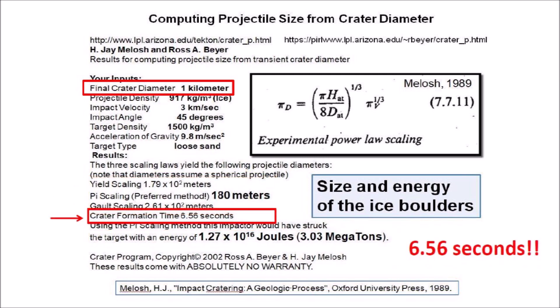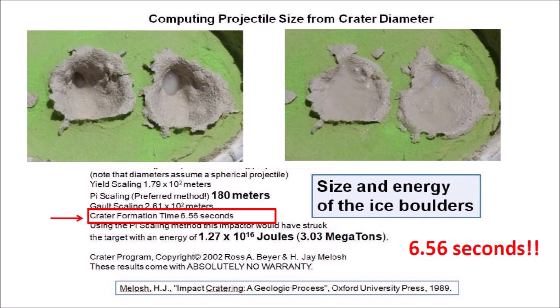Another interesting number produced by the projectile size calculator is the crater formation time. A Carolina Bay with a diameter of 1 kilometer would have formed in 6.56 seconds. The crater creation time is really fast and it means that the formation of the conical cavities and the viscous relaxation that reduced them to shallow elliptical basins probably took no more than 15 seconds.